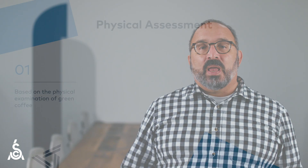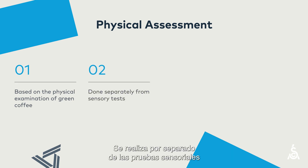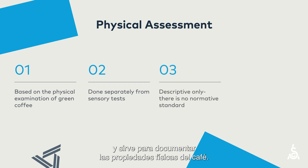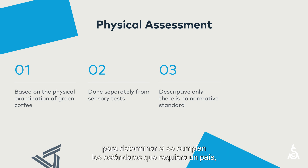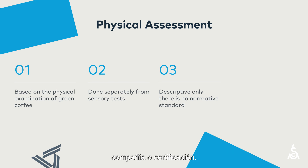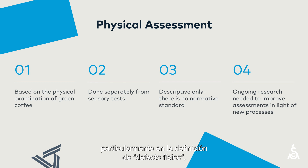In review, the physical assessment is based on the physical examination of green coffee. It's done separately from any sensory tests, and it is meant to document the physical properties of the coffee. The data collected in the physical assessment can be used to determine compliance with various standards that a country, company, or certification might require. SCA is aware that new coffee processes may require different approaches, particularly in the definition of physical defect, and is pursuing ongoing research in this area.